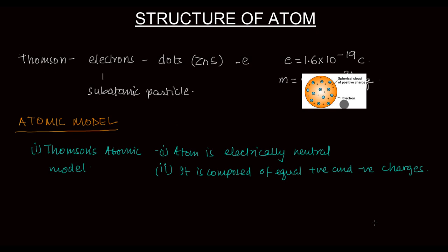Positive charge was still not found out, still not there. Now the third thing: he said you'll have to tell how those charges are arranged. So he said that the positive charge is uniformly distributed all over the atom.